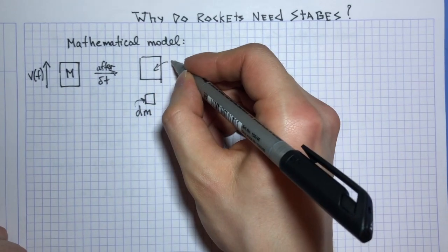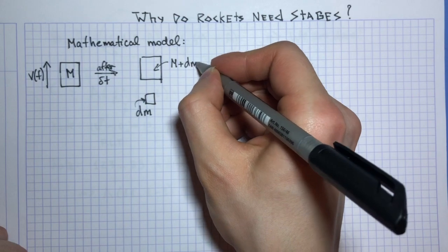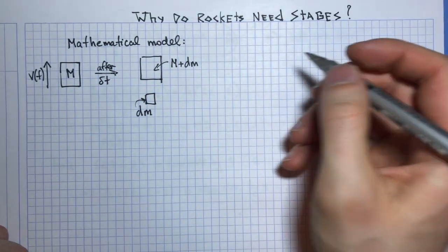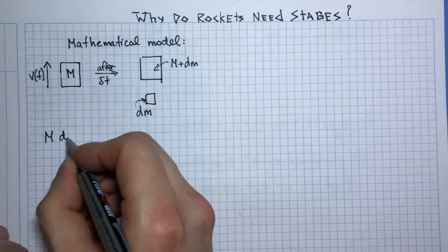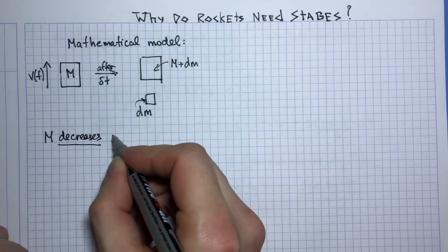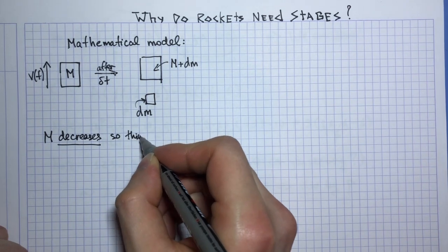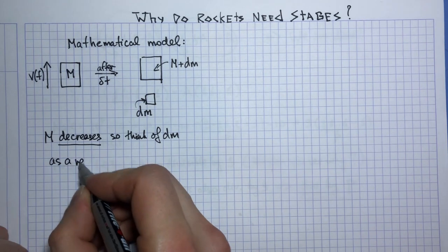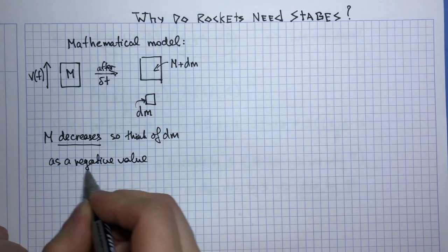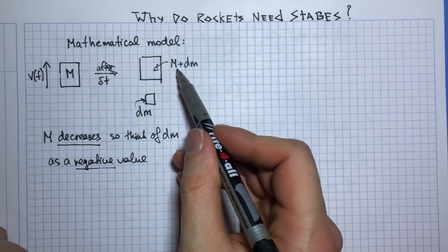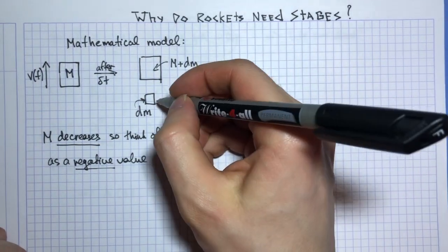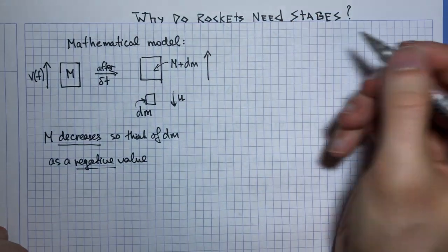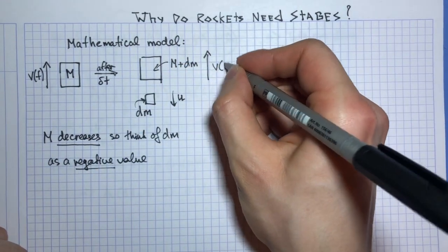So here I will have M plus delta m. Why do I write plus instead of minus? Because M decreases, so think of dm, this change in mass, as a negative value. So if I add dm to M I would decrease M. Suppose that the ejection speed of my fuel is u and then the speed of my rocket becomes v(t + delta t).